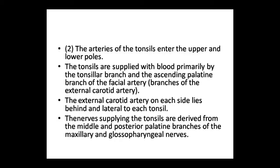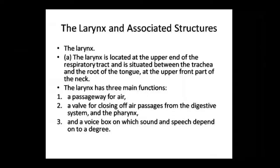Tonsils are supplied by blood primarily via the tonsillar branch and ascending palatine branch of the external carotid artery. The external carotid artery is found on both lateral sides behind the tonsil. The nerve supply to the tonsils comes from the medial pterygoid palatine branch, and from the maxillary and glossopharyngeal nerves.